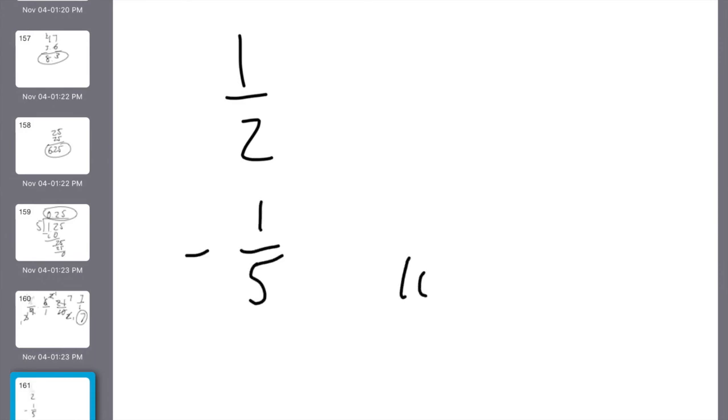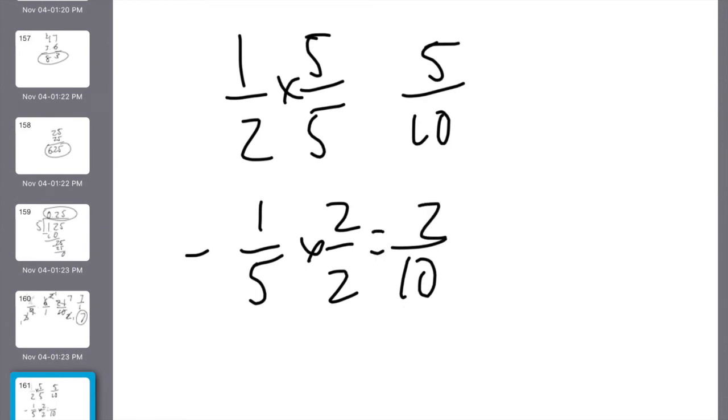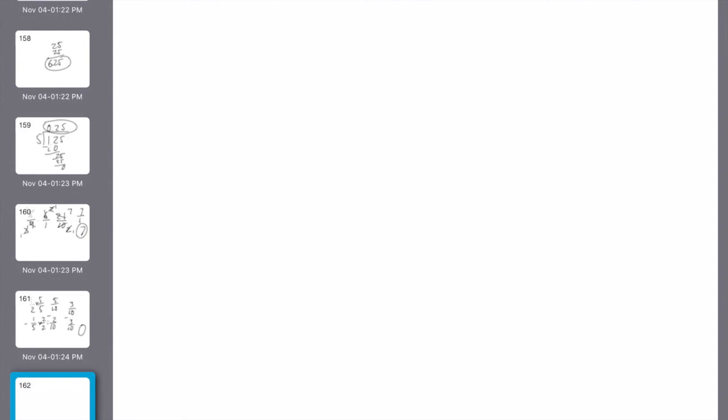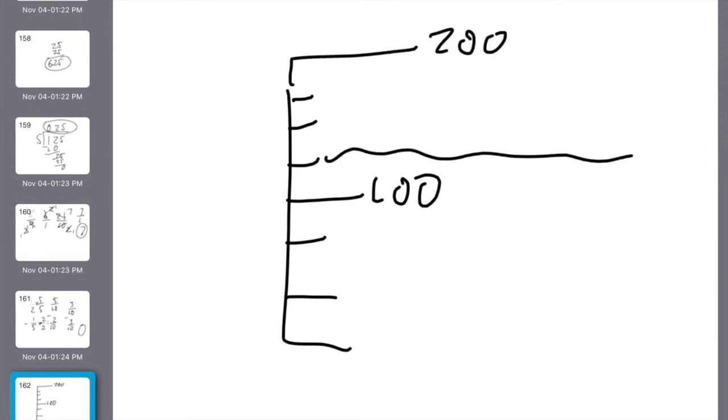26. Parentheses says do it first. So the first thing is 1 half minus 1 fifth. Common denominators would be 10. Times 5 over 5 here to give me 5 tenths. Times 2 over 2 here gives me 2 tenths. I am subtracting that. Gives me 3 tenths. I'm now taking 3 tenths and subtracting 3 tenths from it. Well, that equals 0, guys.